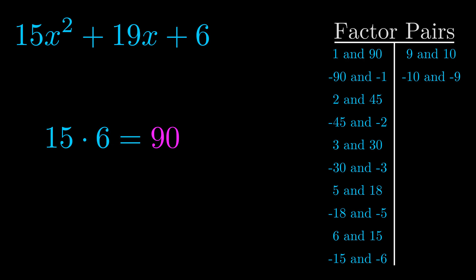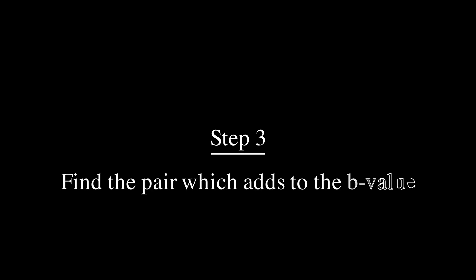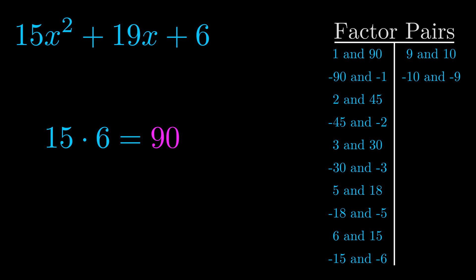Now once you have these factor pairs, the goal is to find which of these pairs adds to the b value. The b value is the coefficient on the x term. That's the middle term, the one that we haven't done anything with yet. And really this is the only factor pair that we need.